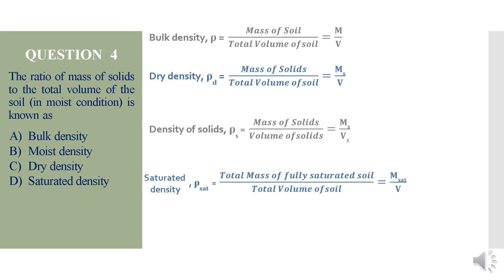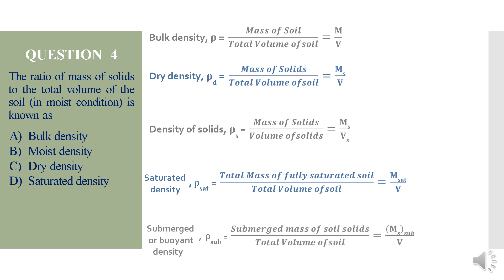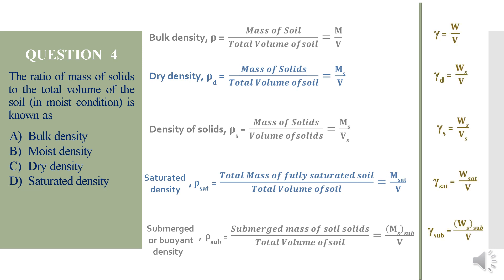Saturated density is the total mass of fully saturated soil divided by total volume of soil, represented by ρsat. Submerged or buoyant density is the submerged mass of soil solids divided by total volume of soil. For unit weights, the equations are comparable — replacing density with unit weight (γ notation) and mass with weight, with different units.